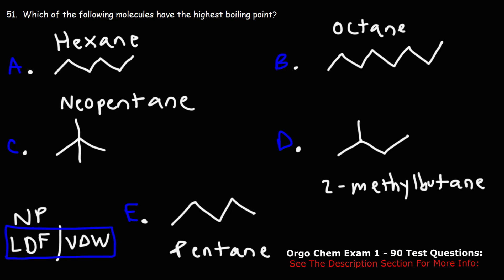So which one is it going to be? Now there's two things you need to look at. Number one, the molecular weight. As the molecular weight increases, as you add more carbon atoms to the chain, the amount of Van der Waals Forces is going to increase, and so the boiling point is going to be higher.